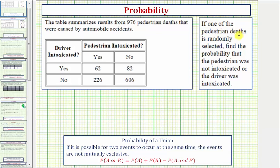If one of the pedestrian deaths is randomly selected, find the probability that the pedestrian was not intoxicated or the driver was intoxicated. So we want to determine the probability that the pedestrian was not intoxicated, so we'll say P not intoxicated or intox, or the driver was intoxicated, so we'll say D intox.